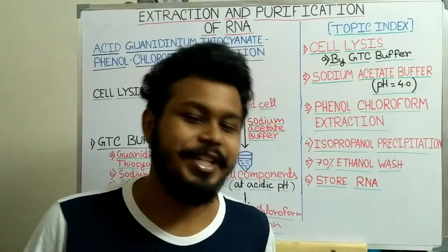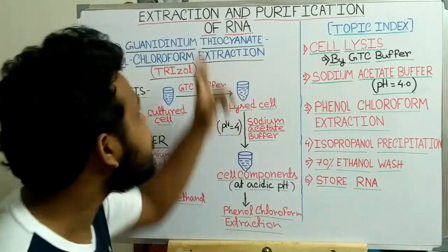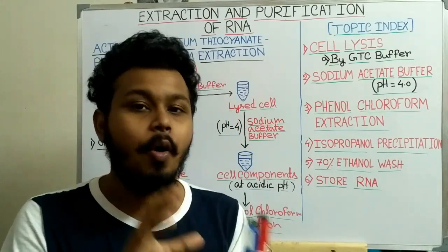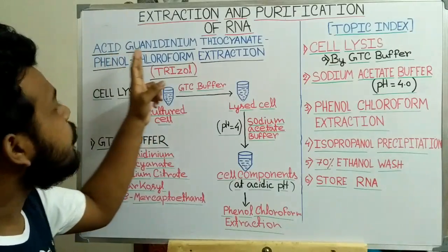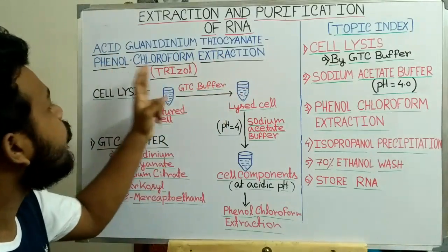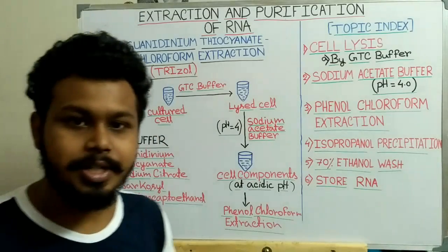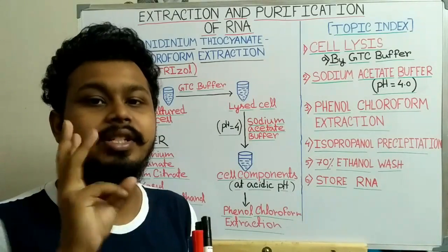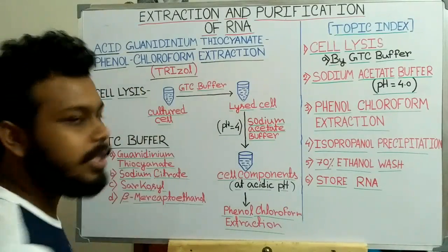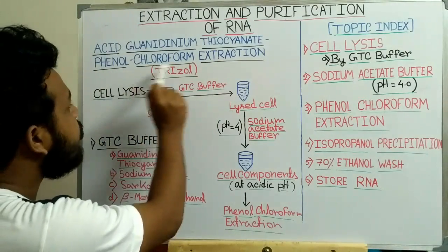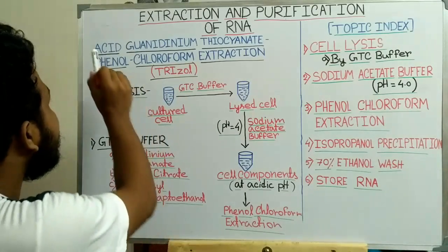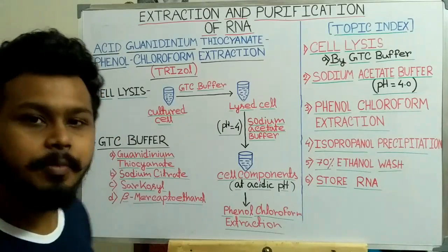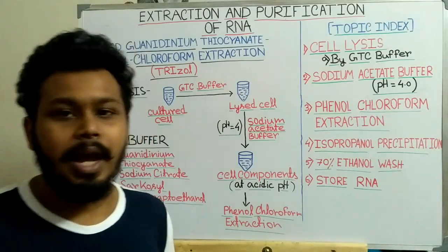Today we will discuss the extraction and purification of RNA. This process is also called the acid guanidinium thiocyanate phenol chloroform extraction, also known as the Trizol extraction. It is called Trizol because three reagents are used: guanidinium thiocyanate, phenol, and chloroform. An acidic pH is required for this extraction process.